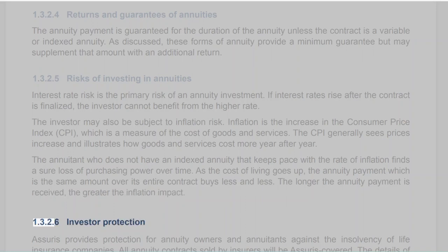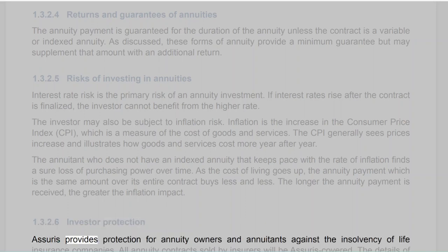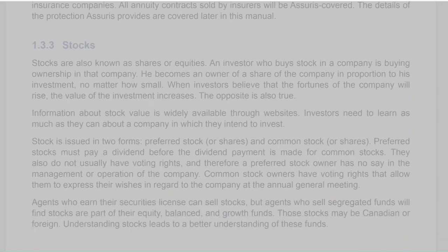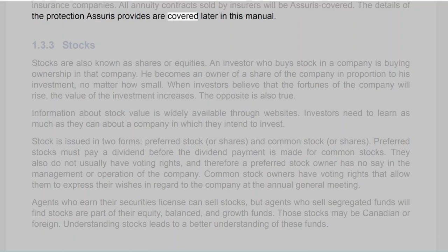Section 1.3.2.6: Investor Protection. Assuris provides protection for annuity owners and annuitants against the insolvency of life insurance companies. All annuity contracts sold by insurers will be Assuris-covered. The details of the protection Assuris provides are covered later in this manual.